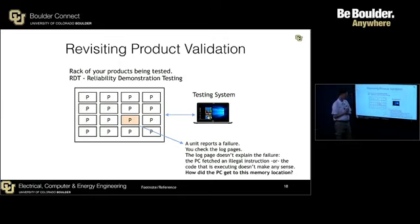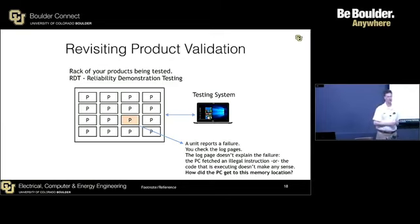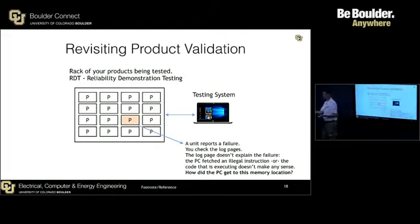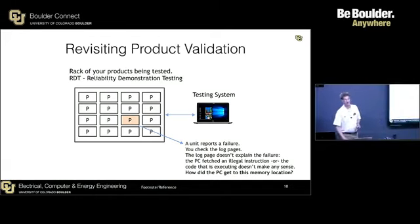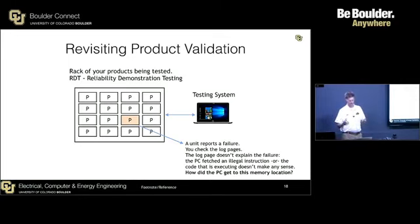The PC fetched an illegal instruction, or the code that is executing just doesn't make any sense at all. You look at the program counter and go, how in the world did it get there? It should never have gotten there. How did the PC get to this memory location? This happens a lot — this is a question engineers ask often during product validation in RDT. If you don't have the appropriate infrastructure in place, it is nearly impossible to figure it out. Firmware engineers without a properly built debug infrastructure system will spend hours and hours trying to figure out how the program counter got to a certain place.